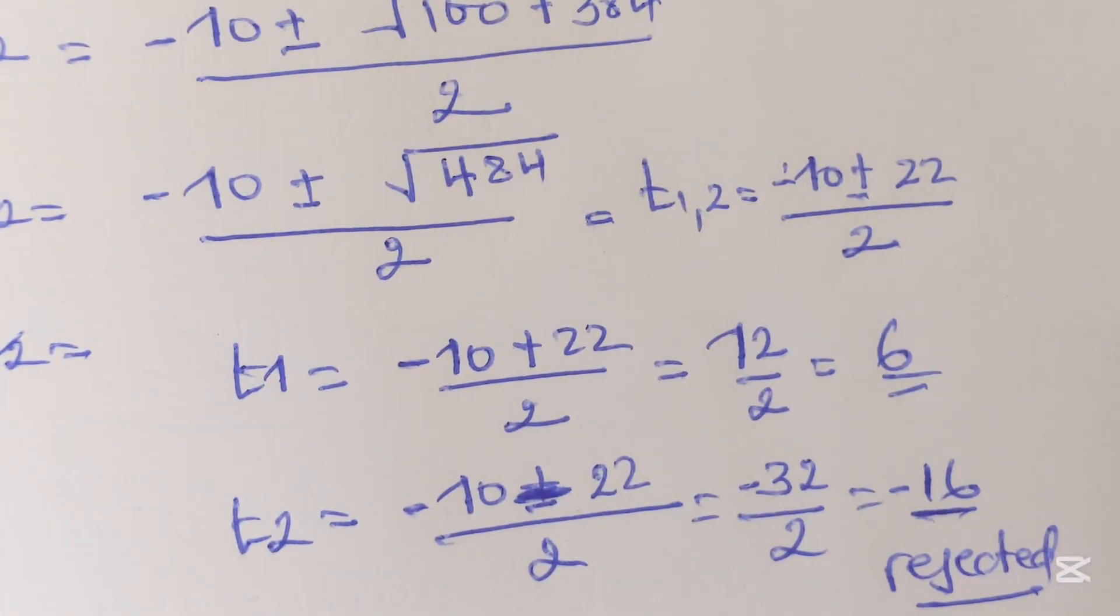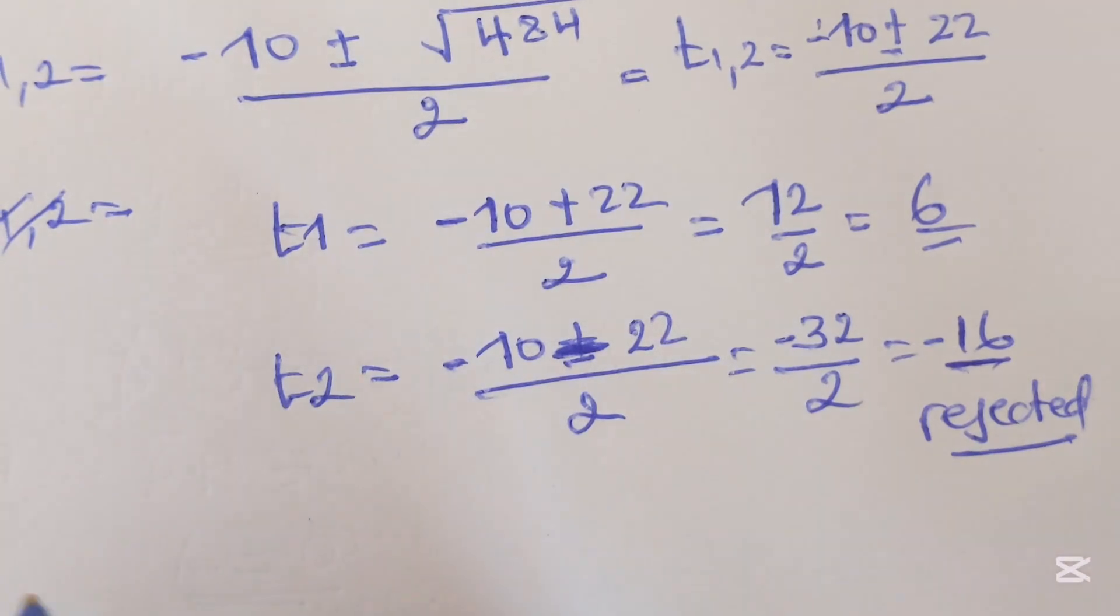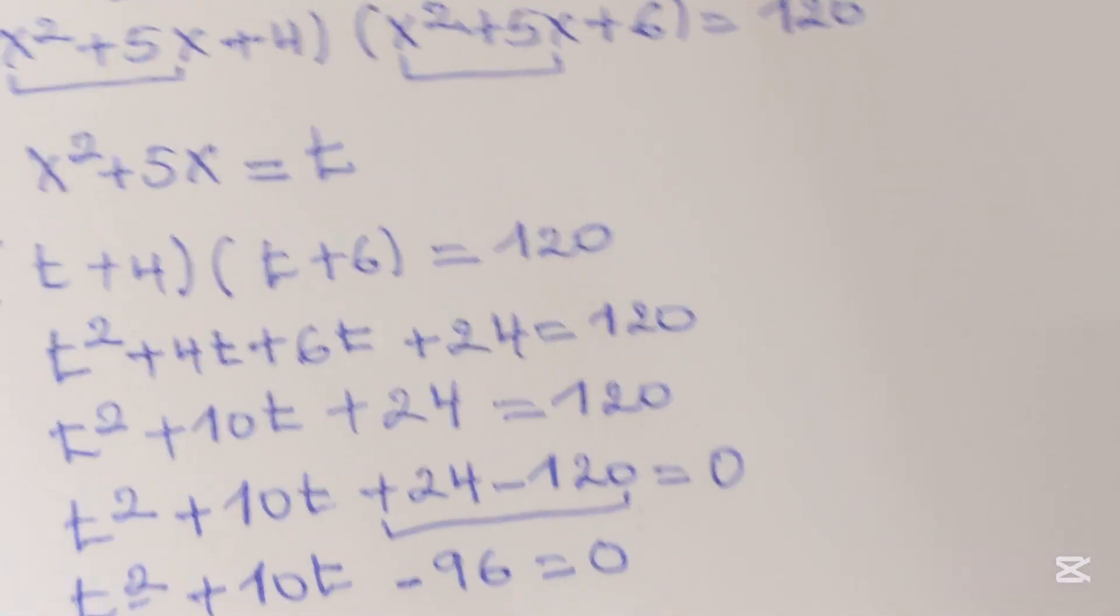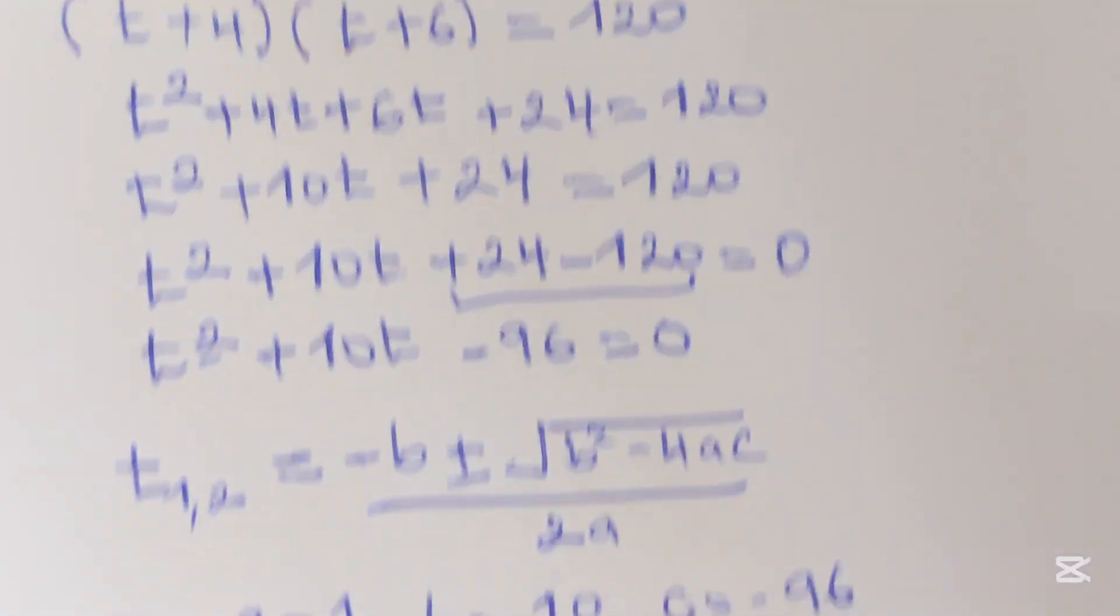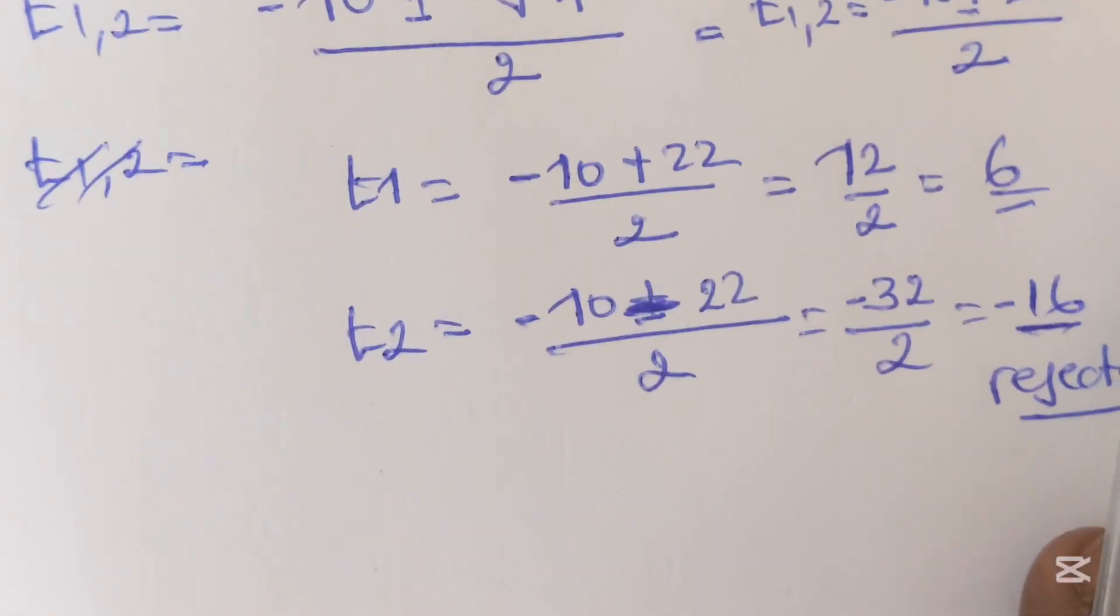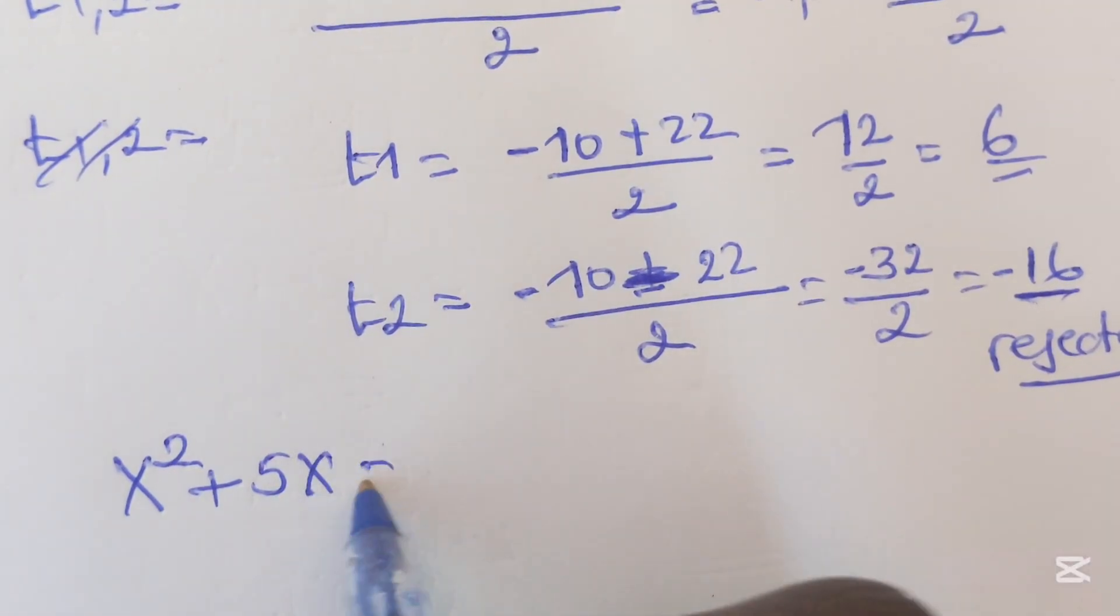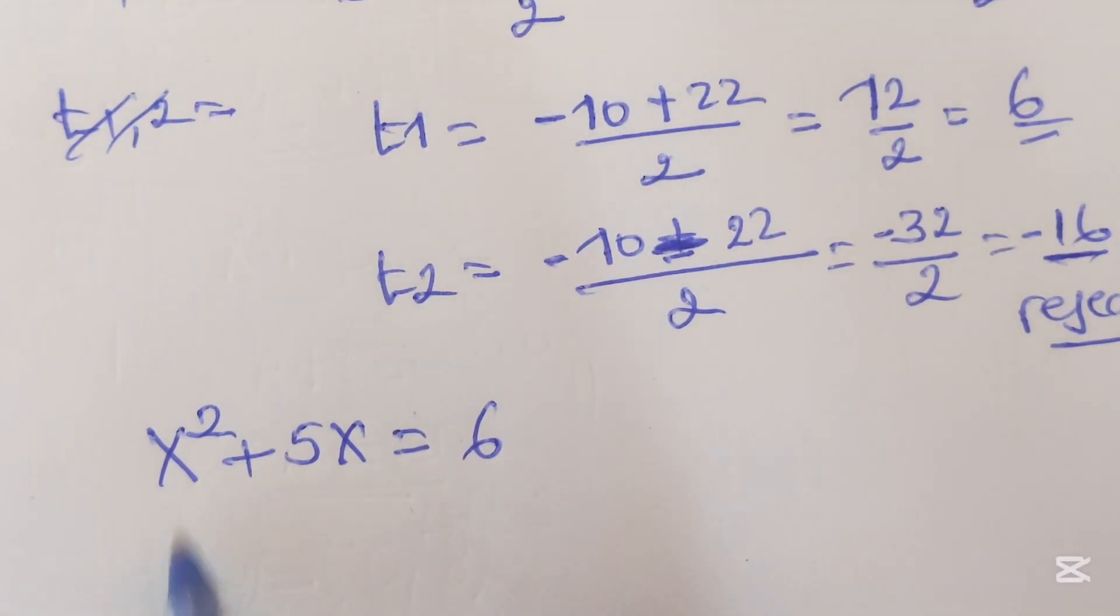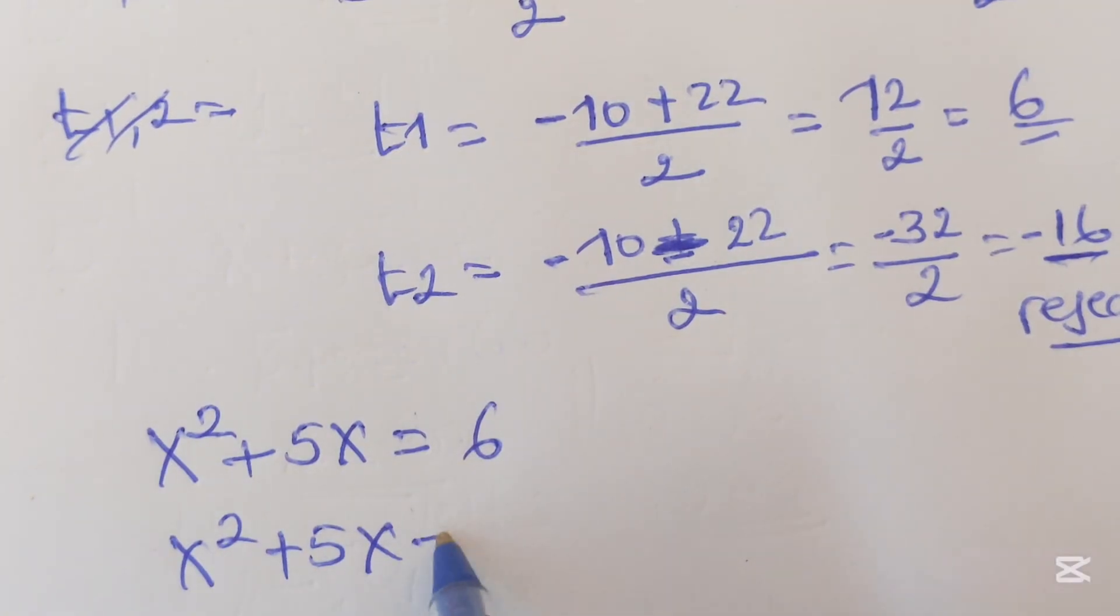This value will be rejected, so we're still dealing with this one. And here we have said that, above here, I have said x squared plus 5x equals to t and we have value of t. So that x squared plus 5x equals 6. Now here we have x squared plus 5x then minus 6 equals 0.